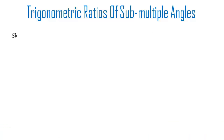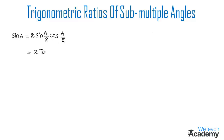The formula for sine A will be equal to 2 sine(A/2) into cos(A/2). You can also write sine A which will be equal to 2 tan(A/2) divided by 1 plus tan squared(A/2).